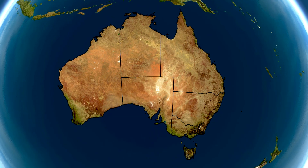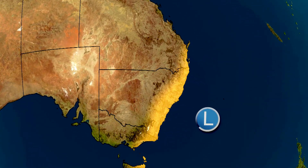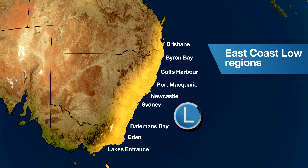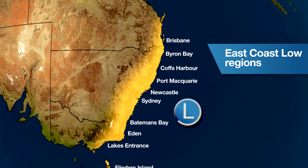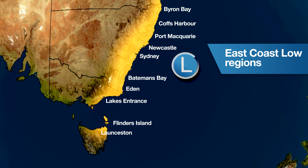East Coast lows are intense low pressure systems that often produce severe weather and, as the name suggests, they form off the east coast of Australia, affecting all of the New South Wales coast, the southeast Queensland coastline, and far eastern Victoria and sometimes Tasmania.